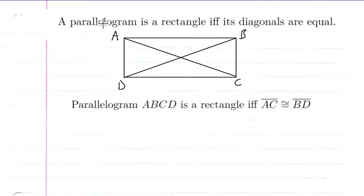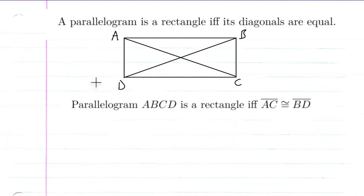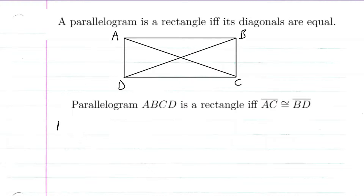We're going to prove that a parallelogram is a rectangle if and only if its diagonals are equal. So basically we're going to show parallelogram ABCD is a rectangle if and only if AC is congruent to BD. If we have a parallelogram where its diagonals are congruent, we know it's a rectangle. And if we have a parallelogram where we know it's a rectangle, then we know its diagonals are congruent. So let's go ahead and start the proof.